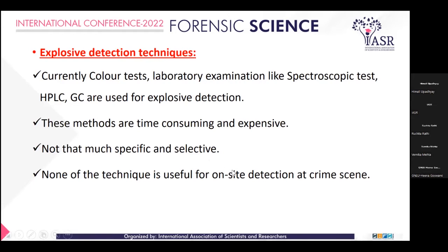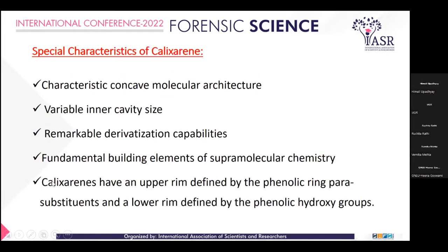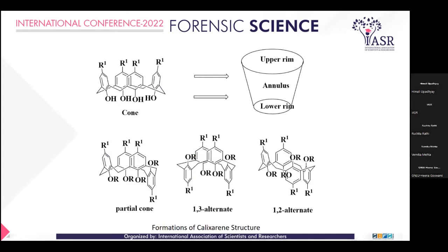So we use the new method which is calixarene. Calixarene has a characteristic concave molecular architecture. Calixarene shows different molecular structure shapes and sizes like boat structure, cone structure, partial cone, and crown structure.